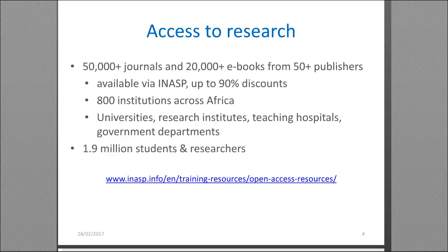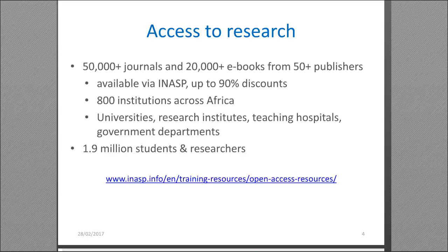We work with publishers and library consortia — pulling together groups of libraries and librarians in-country at a big roundtable so we can all work together effectively to increase access to resources, either at a discounted rate or for free. We've been able to provide access to over 50,000 journals, 20,000 ebooks, and work with over 50 publishers.